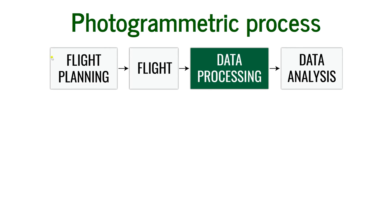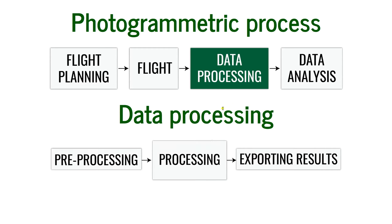The photogrammetric process starts with flight planning — it all begins in the head of the person who will be planning, flying, processing, and analyzing the data. We are on step three right now. Data processing itself is divided into stages: the pre-processing stage, the main processing stage, and lastly, what results we can export after processing all the data.